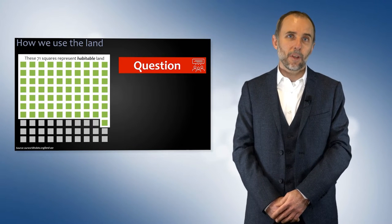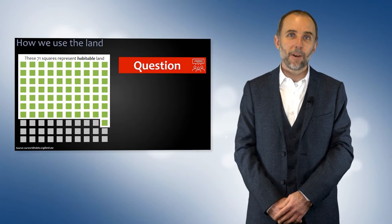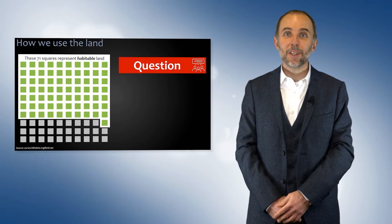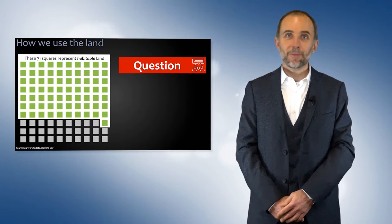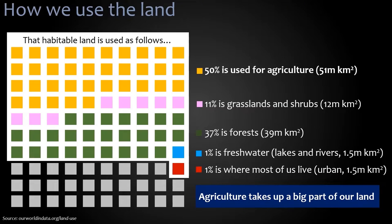Here's a question for you: of that habitable land, how much do you think is used for agriculture, and how much is used for the cities that most of us live in? 50% of the habitable land is now used for agriculture. Bear in mind that 20,000 years ago, agriculture didn't exist — so during that time, we have converted 50% of our habitable land to agricultural purposes.